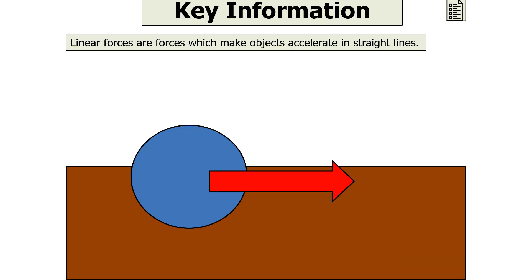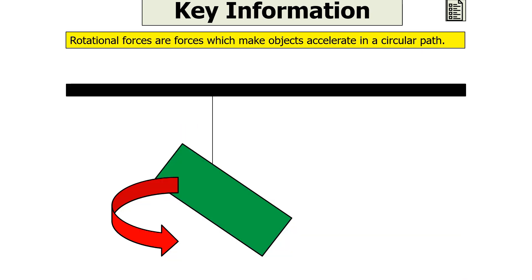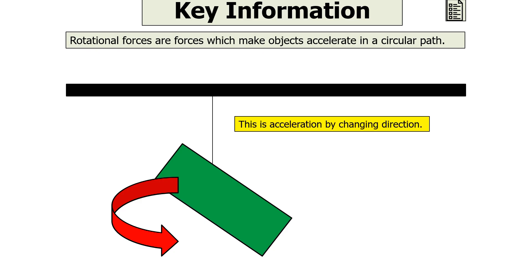Linear forces are forces which make objects accelerate in straight lines — this is acceleration by changing speeds. Rotational forces are forces which make objects accelerate in a circular path. A rotational force, or a system of rotational forces, may cause an object to rotate. This is acceleration by changing direction.